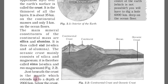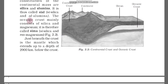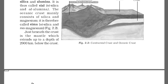Just beneath the crust is the mantle, which extends up to a depth of 2900 km. This is the continental crust, this is the continent, this is the ocean, and this is the oceanic crust. These are all the parts of the earth shown in the diagram.